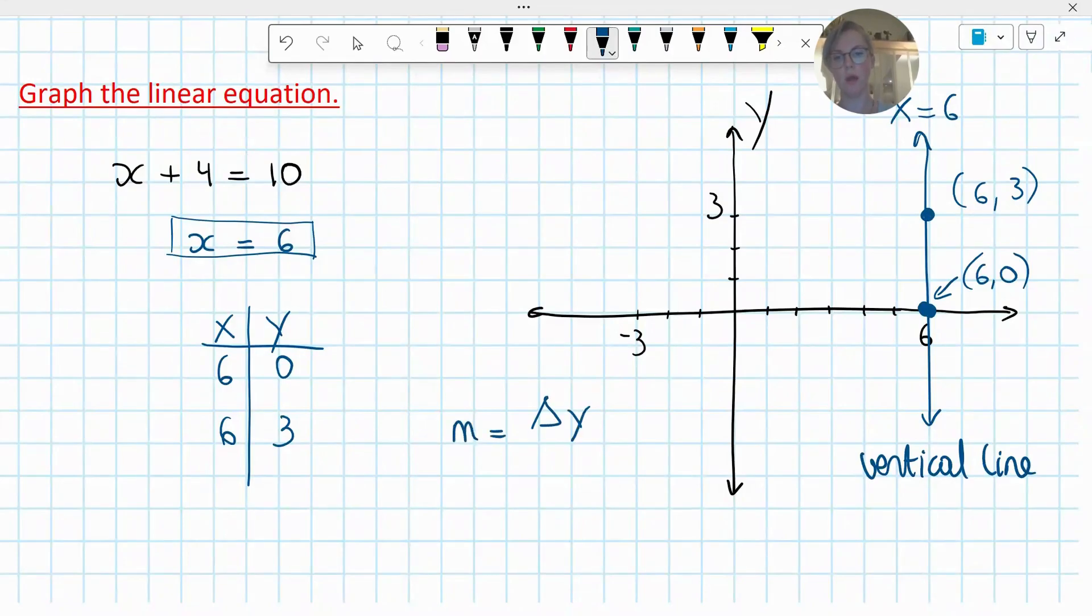The slope is the change of y over the change of x. Pretend this is your first point and this is your second point. How much is the y changing from the first point to the second point? What is the change of y from 3 to 0? That's negative 3.